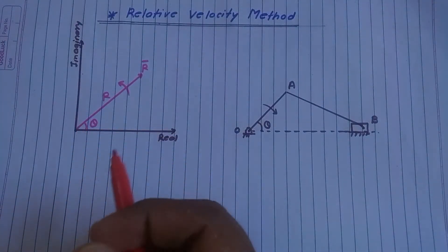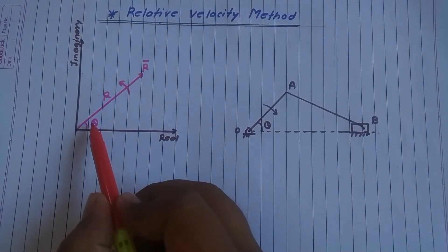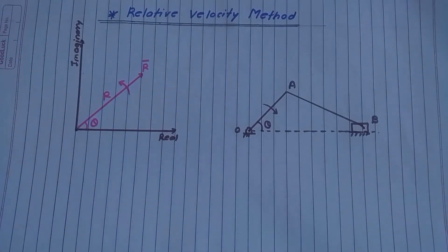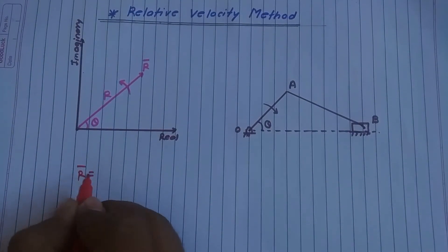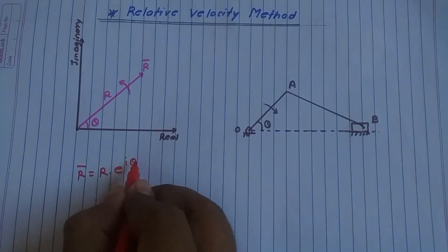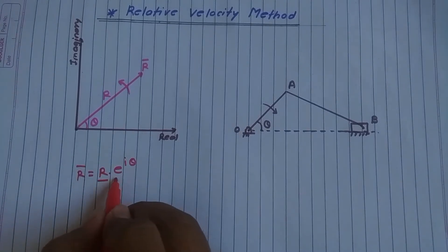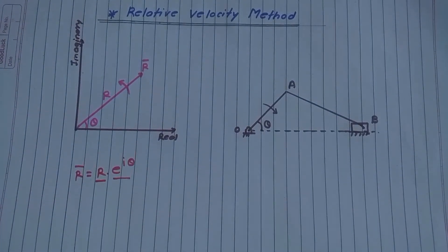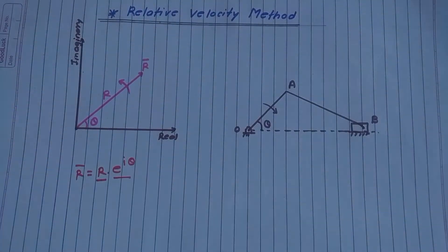For that, consider one vector r bar whose magnitude is r, which is inclined at angle theta anti-clockwise to the coordinate system. We know vector can be written as vector r bar equals r e raised to i theta, where r is magnitude of this vector and e raised to i theta is unit vector in that direction, that is theta.